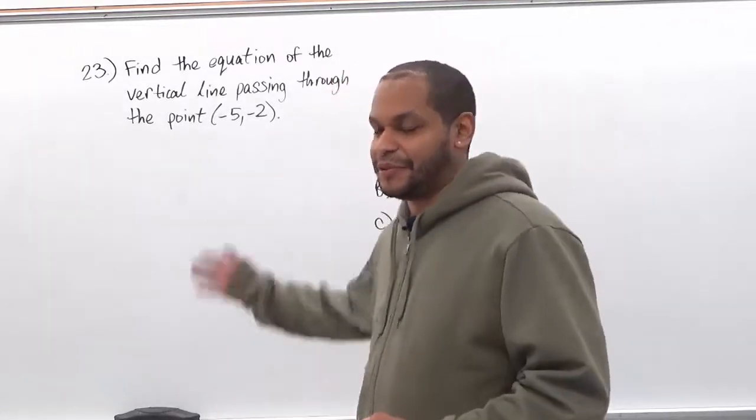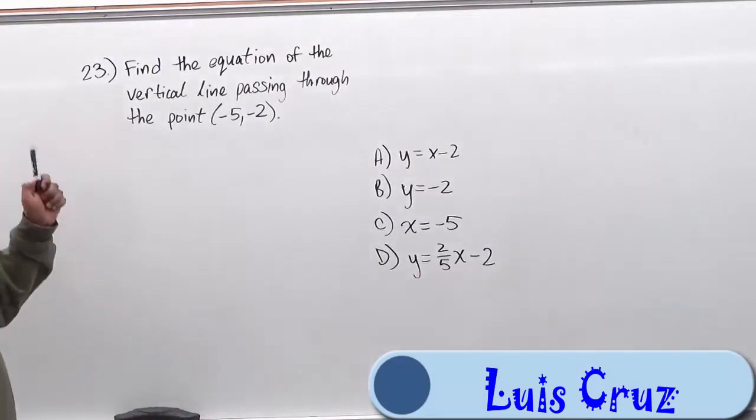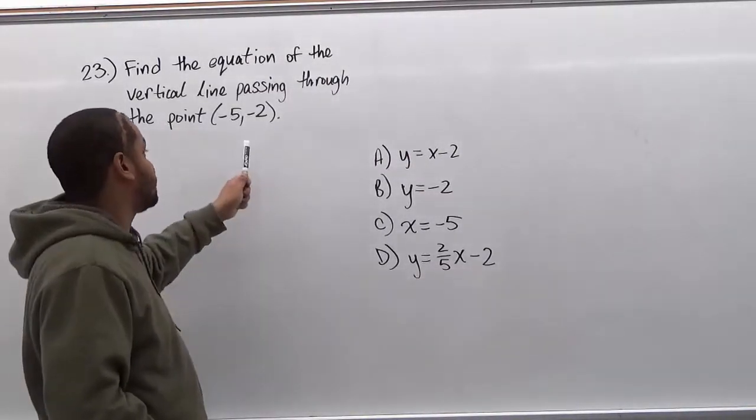Welcome to HelpYourMath.com. Today we'll be doing problem number 23, and we want to find the equation of the vertical line passing through the point negative 5, negative 2.